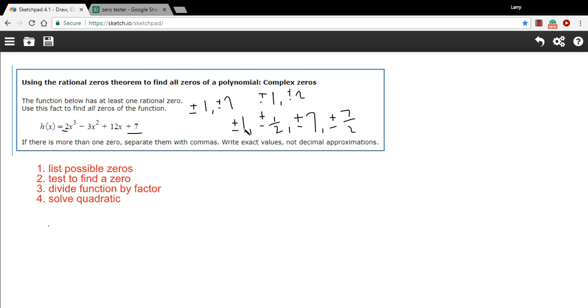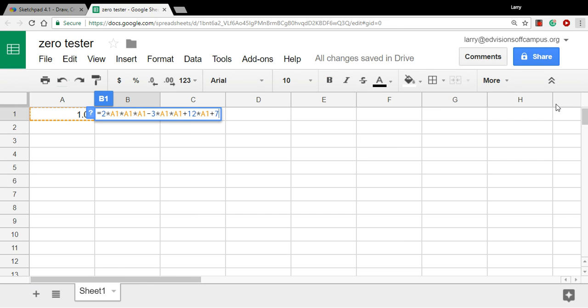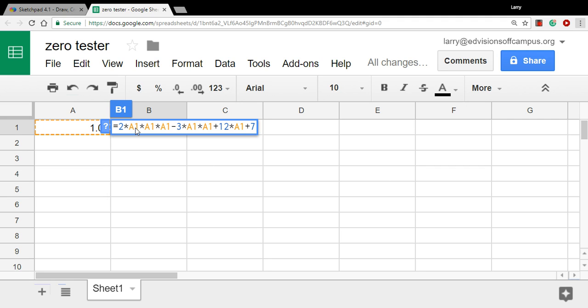Now we would test these by plugging positive 1, negative 1, positive 1 half, negative 1 half, all of these values in for x and crunching them out. I don't really want to do that, get out a calculator and kind of do that by hand. So I've set up a spreadsheet where I've got the formula of the function right in here. Let me zoom in and show you. Okay, so here a1 is this box right here, and that stands in for x. So we'll put in our x values there. So this is 2 times x three times. That's 2x cubed minus 3x squared plus 12x plus 7. So that's the equation for our function.